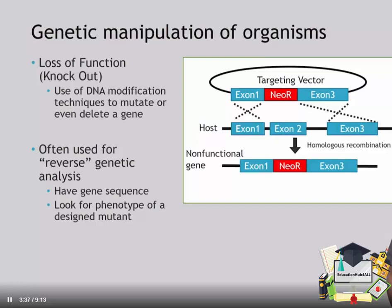Here we're showing the use of a targeting vector that integrates into the host genome through homologous recombination. The targeting vector contains homology arms representing exon 1 and exon 3 of the targeted gene, as well as a neomycin resistance cassette, which gives resistance to the antibiotic neomycin. Upon integration and recombination into the host genome, the second exon is deleted, generating a non-functional transcript, and the now-mutated organisms can be selected for on neomycin-containing media.